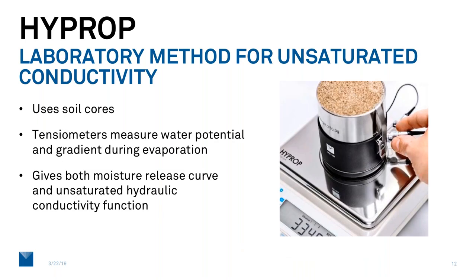Another device that we build and sell here is called the HYPROP. It measures the unsaturated hydraulic properties of a sample of soil. Again, we go to the field, we get a soil core, we bring it back to the laboratory and put it on this device. The device has two tensiometers inside it to measure the soil suction. The water evaporates from the top of the soil column to establish a gradient within the column. We measure the rate of water loss from the column using the balance, and then from the rate of water loss and the measurements of tension we're able to determine both the moisture release curve and an unsaturated hydraulic conductivity function for the soil.